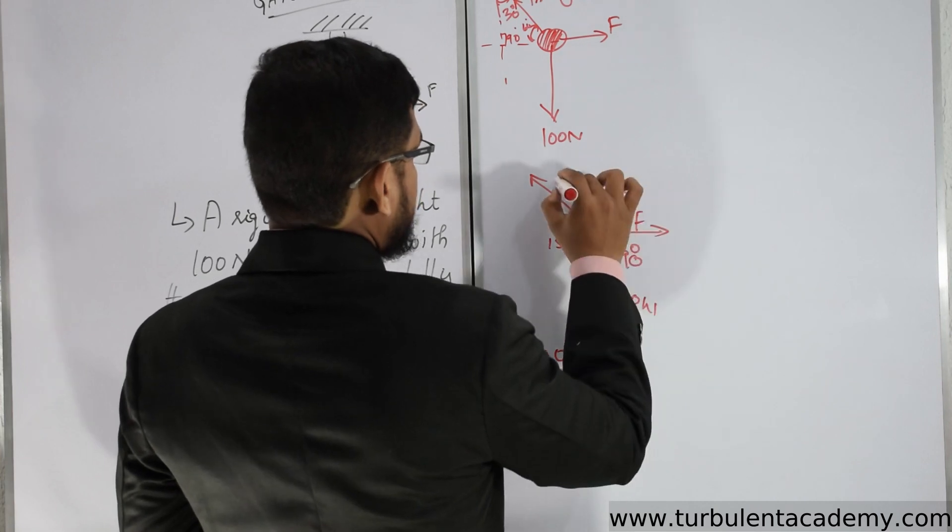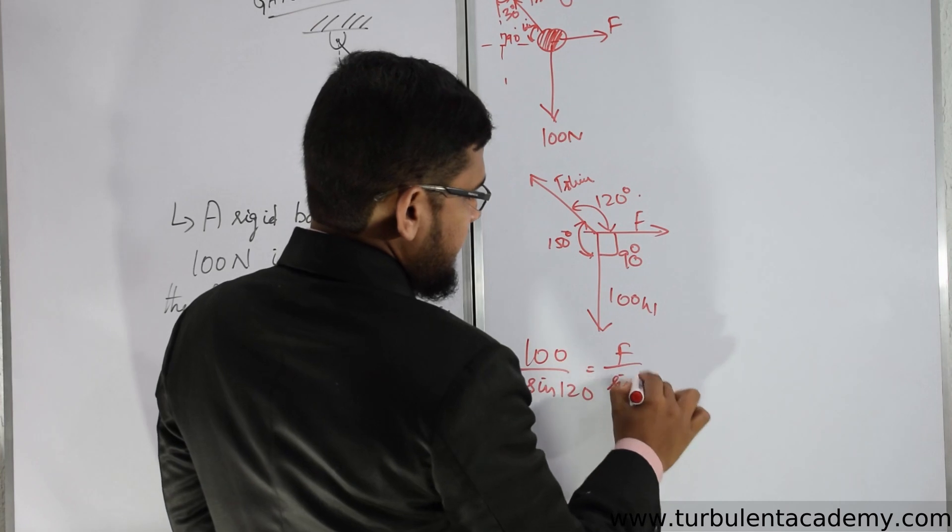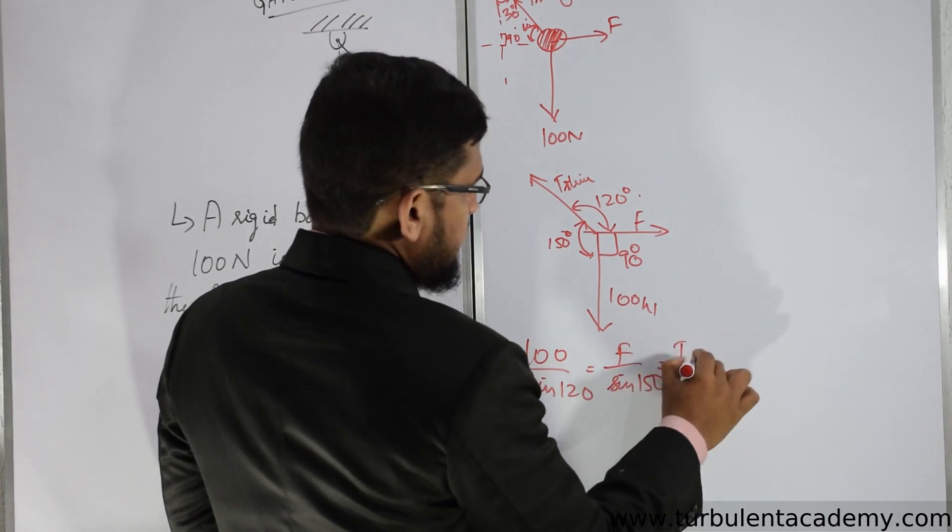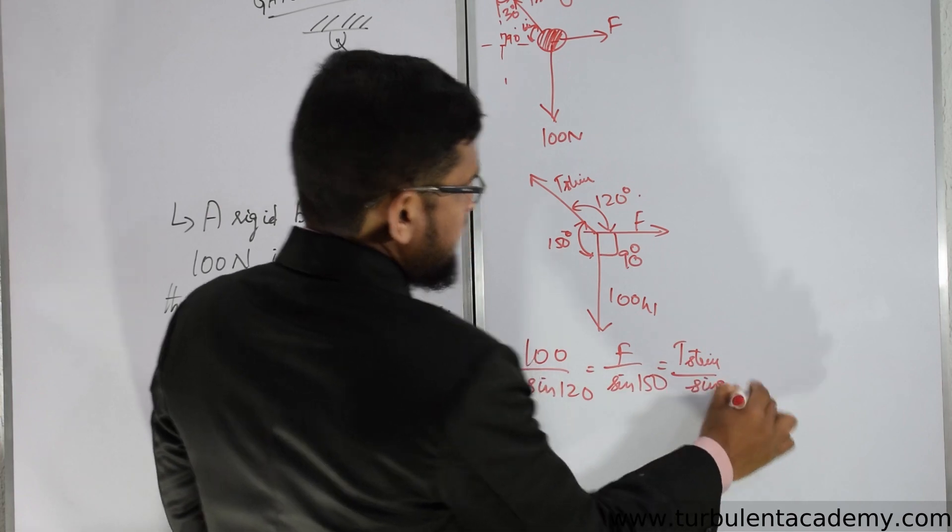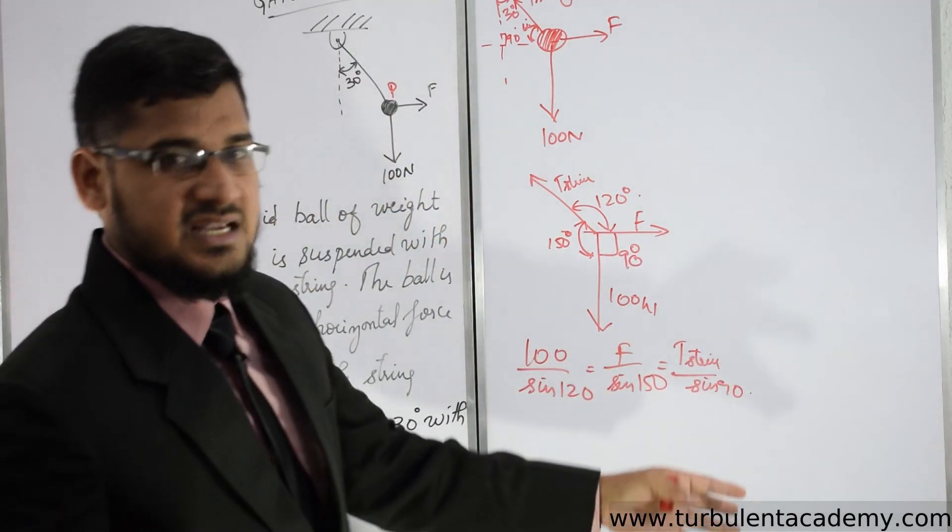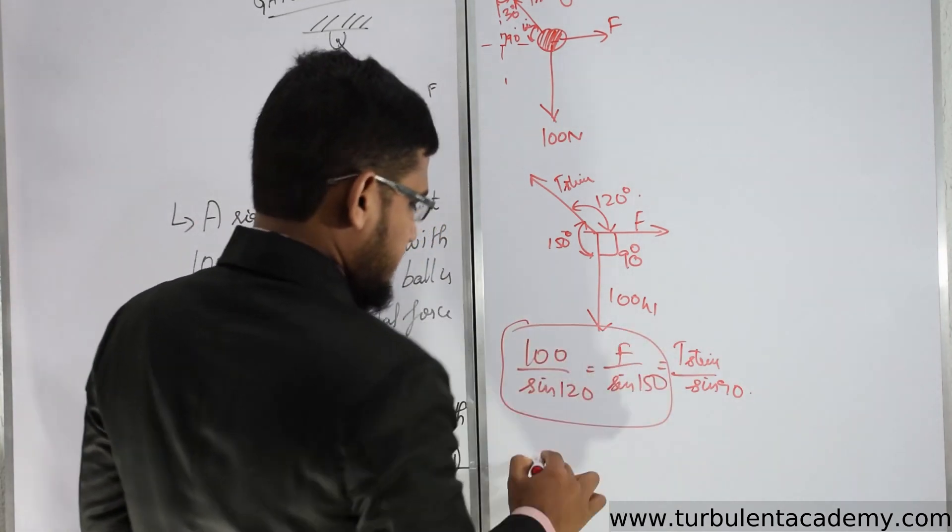F by sine 150 equal to T string divided by sine 90. No need of T string by sine 90, but for you to understand, just solve this.